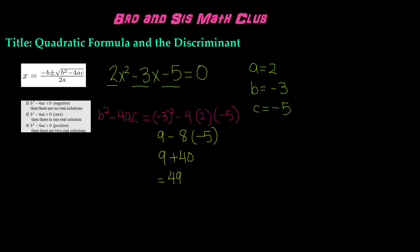That means the value of the discriminant for this quadratic equation is positive 49. Going back to the chart, it says that if b squared minus 4ac is greater than 0 — that means it's positive — then there are two real solutions. That means that this quadratic equation, 2x squared minus 3x minus 5, has two real solutions, meaning there are two solutions that are real numbers.